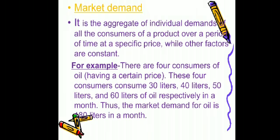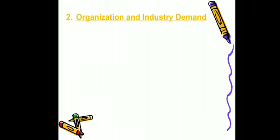Here we can take an example. There are four consumers of oil, each consuming at a certain price: the first consumes 30 liters, the second 40 liters, the third 50 liters, and the fourth 60 liters in a month. To find market demand we aggregate the totals of all these consumers. Thus the market demand of oil is 180 liters in a month — this is called market demand.